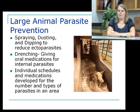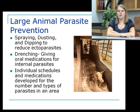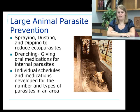For large animal parasite prevention, it's more difficult — you can't do a spot-on treatment on every cow in a herd. Spraying, dusting, and dipping are used to reduce ectoparasites such as flies and ticks. We also use drenching, which is giving oral medication for internal parasites. It is important with large animals to use individual schedules and medications developed for the number and type of parasites in an area, because not all parasites are the same and can't all be treated the same.